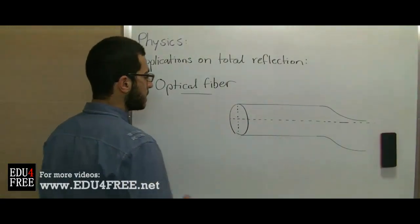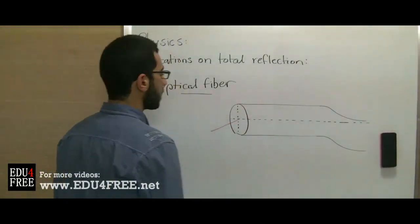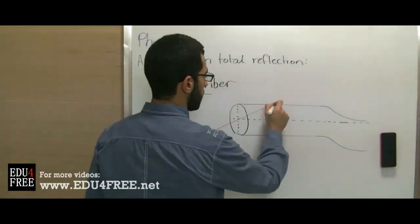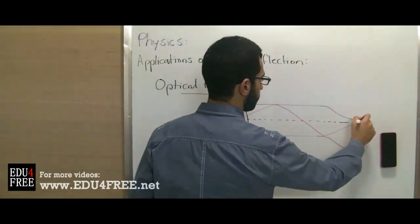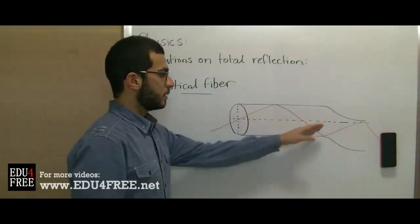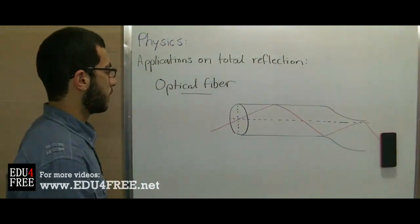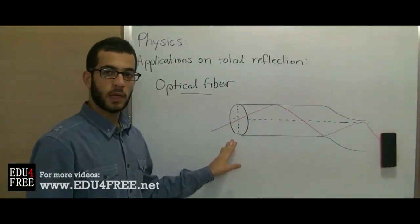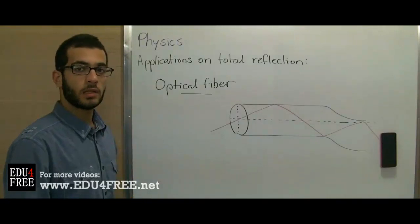So what happens is when the incident light falls with an angle higher than the critical angle, it refracts inside the optical fiber. Then this refraction is followed by multiple reflections inside the optical fiber. So it reaches the other end and then light emerges from the other opening. So even if the optical fiber is bent, the light will move through the curve of the optical fiber and not in a straight line.